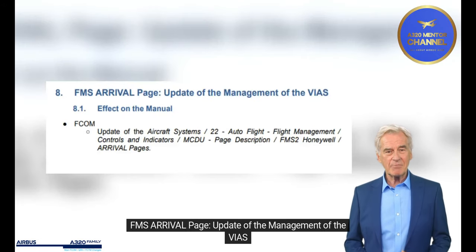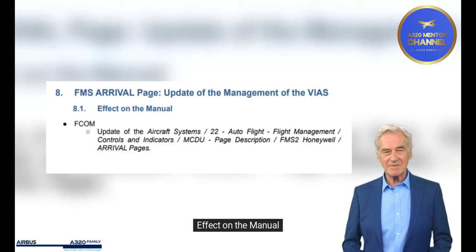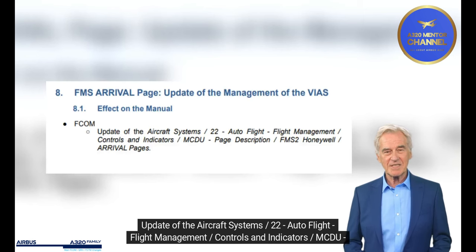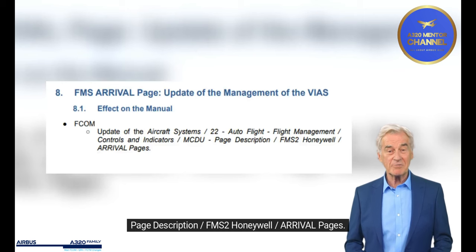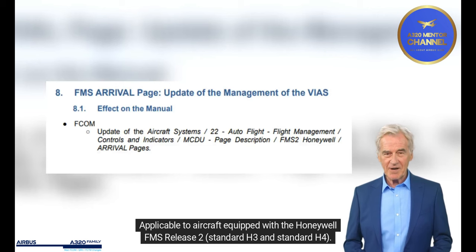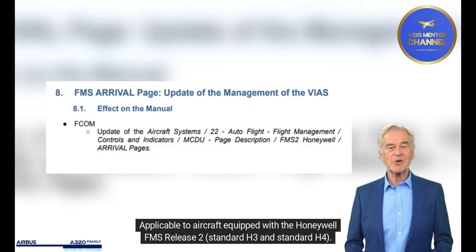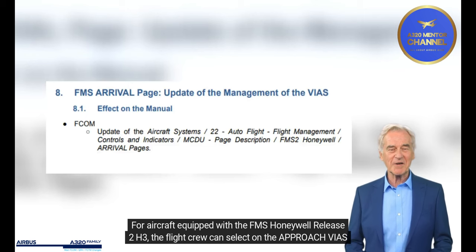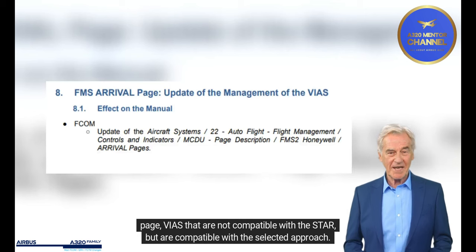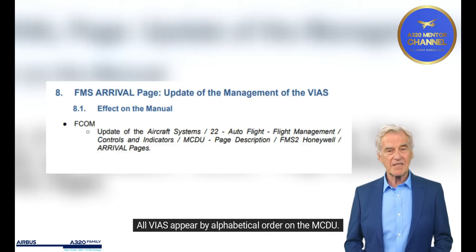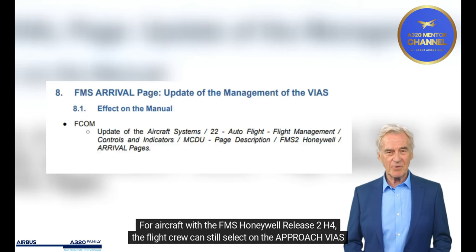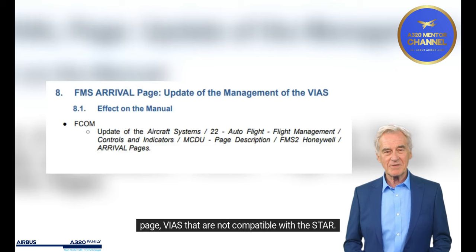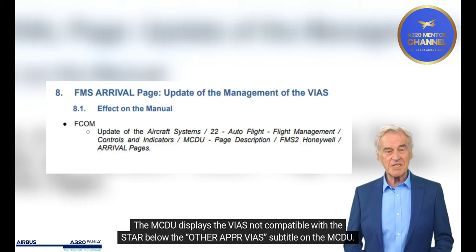FMS Arrival Page — Update of the Management of the VIS. Effect on the Manual FCOM. Update of the Aircraft Systems 22 Autoflight Flight Management, Controls and Indicators, MCDU Page Description, FMS-2 Honeywell Arrival Pages. Applicability: Applicable to aircraft equipped with the Honeywell FMS Release 2 Standard H3 and Standard H4. Summary of the Modifications: For aircraft with FMS Honeywell Release 2 H3, the flight crew can select on the Approach VIS page VIS that are not compatible with the STAR but are compatible with the selected approach — all VIS appear in alphabetical order on the MCDU. For aircraft with FMS Honeywell Release 2 H4, the flight crew can still select VIS not compatible with the STAR, displayed below other VIS with an 'Upper VIS' subtitle on the MCDU.